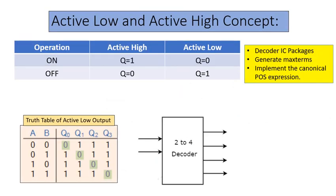The next concept is active low and active high. If the operation is ON and the output equals 1, it is considered active high; if the output is 0, it is active low. If the operation is OFF and it is active high, output will be 0; for active low, output equals 1. Active low operation is commonly used in decoder IC packages to generate max terms and implement canonical POS expressions.